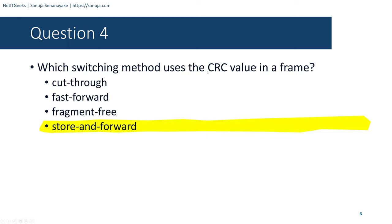Question number forty-eight: Which characteristic describes crosstalk? Options are: the distortion of network signal from fluorescent lighting; the distortion of transmitted messages from signals carried in adjacent wires; the weakening of the network signal over long cable length; or the loss of wireless signal over excessive distance from the access point. The answer is the distortion of transmitted messages from signals carried in adjacent wires. When wires are bundled together, electrical signals can interfere with each other — this is crosstalk, and it is a problem with cat5 and cat6 cables. Note that weakening of signal over long distance is attenuation, a different concept.